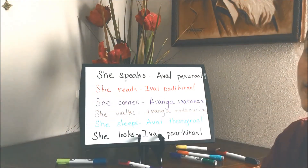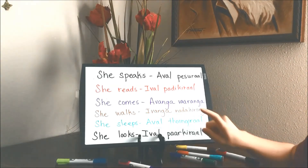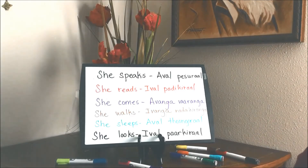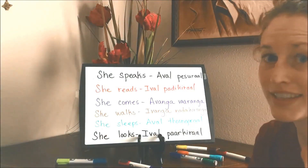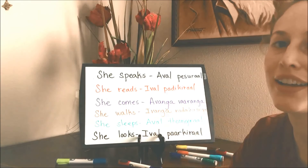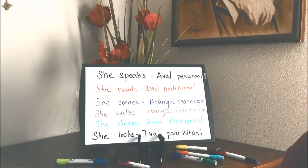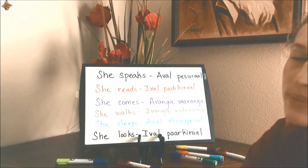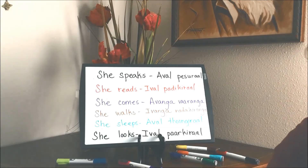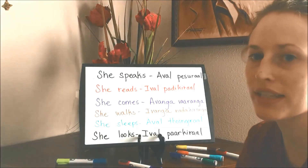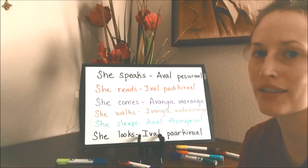You can switch between a vanga, a vanga, or evil — I'm just using different forms of 'she' on different ones. She comes: a vanga varanga. She walks: a vanga nadakaranga. I apologize if I say that wrong — I always have a hard time enunciating my 'a' sounds in English. She sleeps: a vanga nadakaranga. She looks: evil parkera. Go ahead and practice these using different forms of 'she' with the verbs you already know.